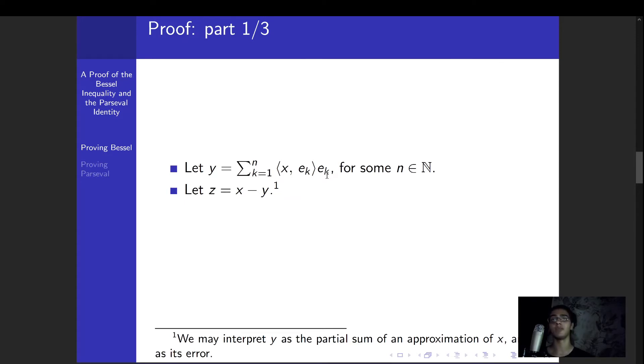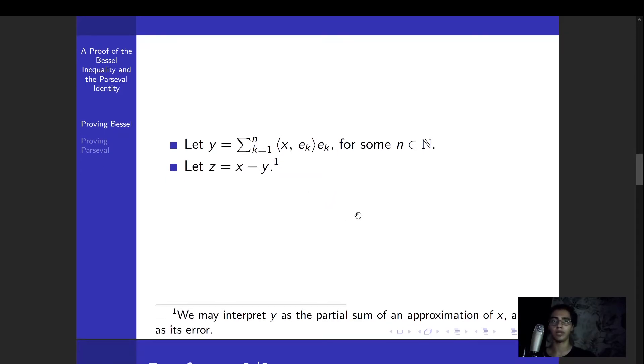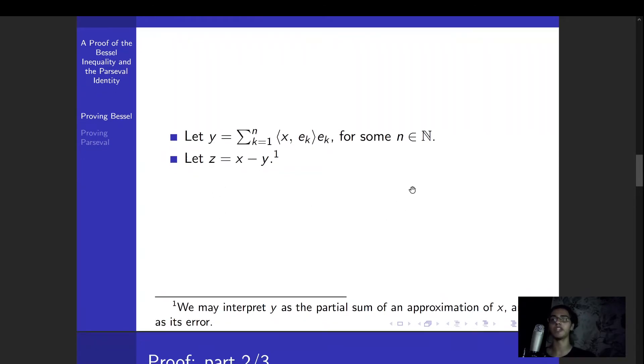And then we're defining z, which is just the difference between x and y. So it looks like the error term, the error of our approximation given by y of the point x. Alright, so we have an approximation of x, which is y, and then the error of that approximation, which is z.